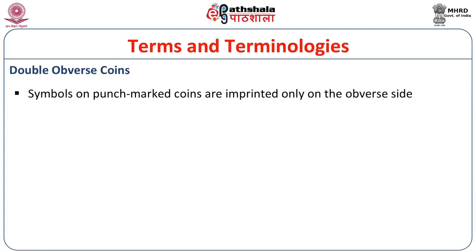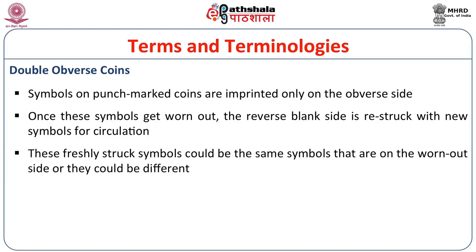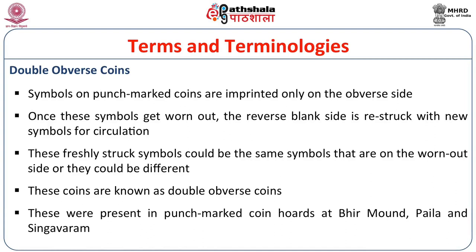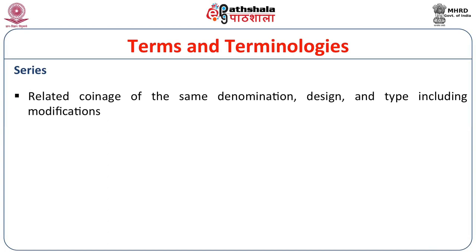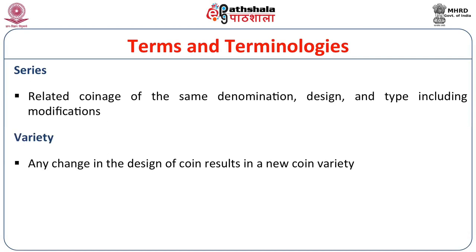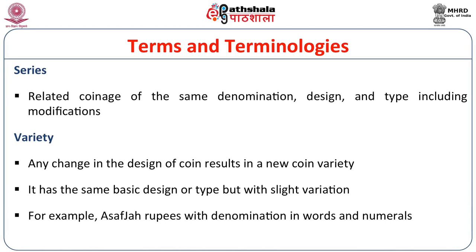Double obverse coins: on punch-marked coins, symbols are imprinted only on the obverse side. Once these symbols get worn out, the reverse blank side is re-struck with new symbols for circulation. These freshly struck symbols could be the same or different from the worn-out side. These coins are known as double obverse coins, and were found in punch-marked coin hoards at Birman, Paila, and Singavaram. A series refers to related coinage of the same denomination or design and type, including modifications. Variety refers to any change in the design of a coin resulting in a new coin variety with the same basic design but slight variations — for example, Asafjahi rupees with denomination in words and numerals.